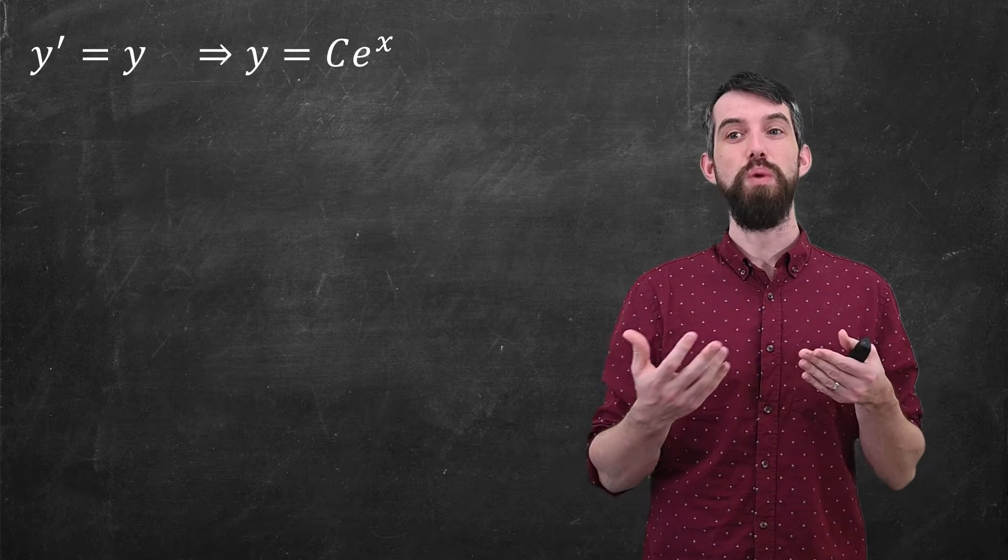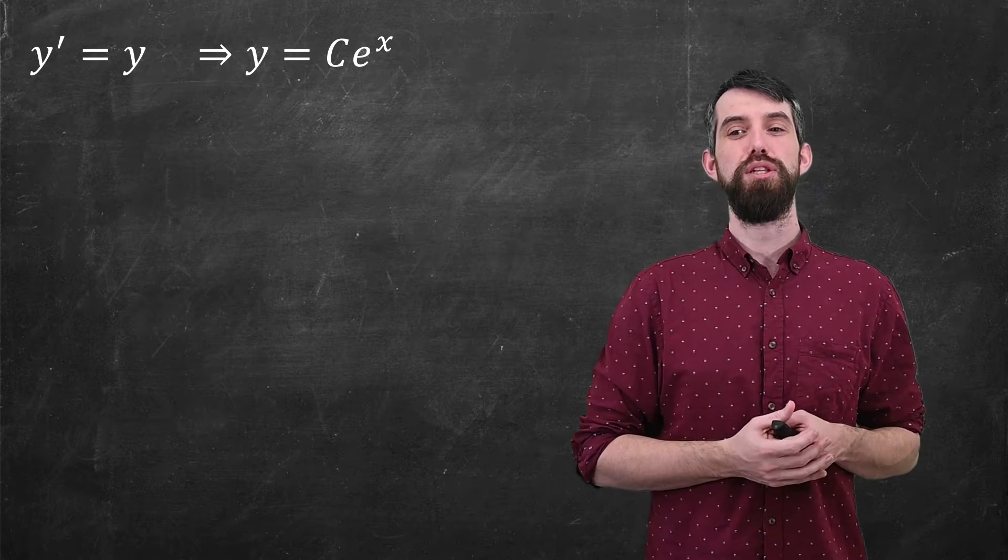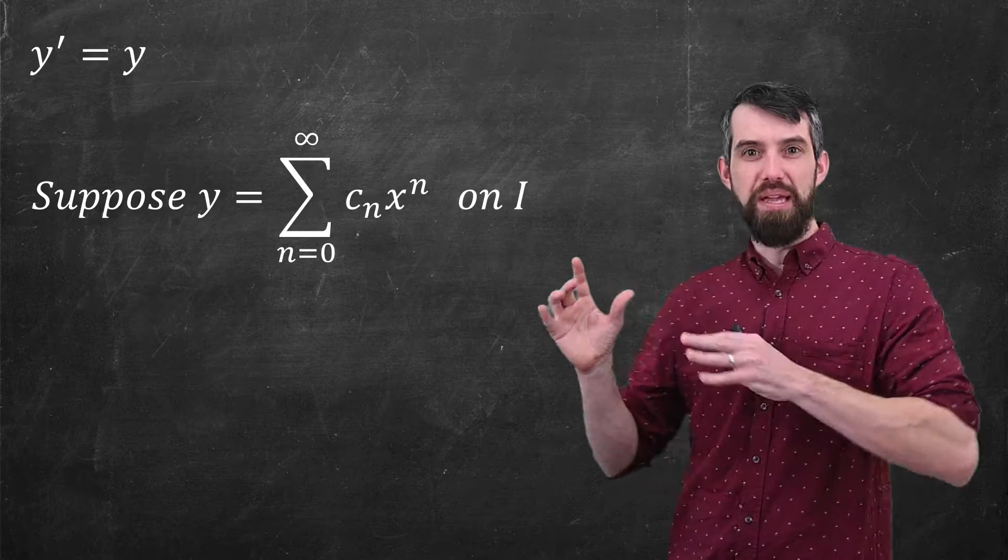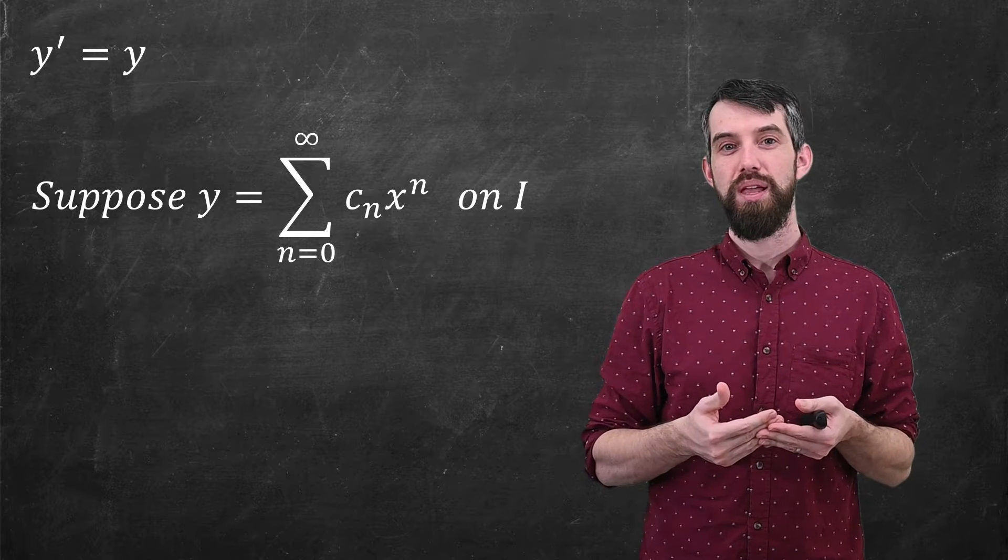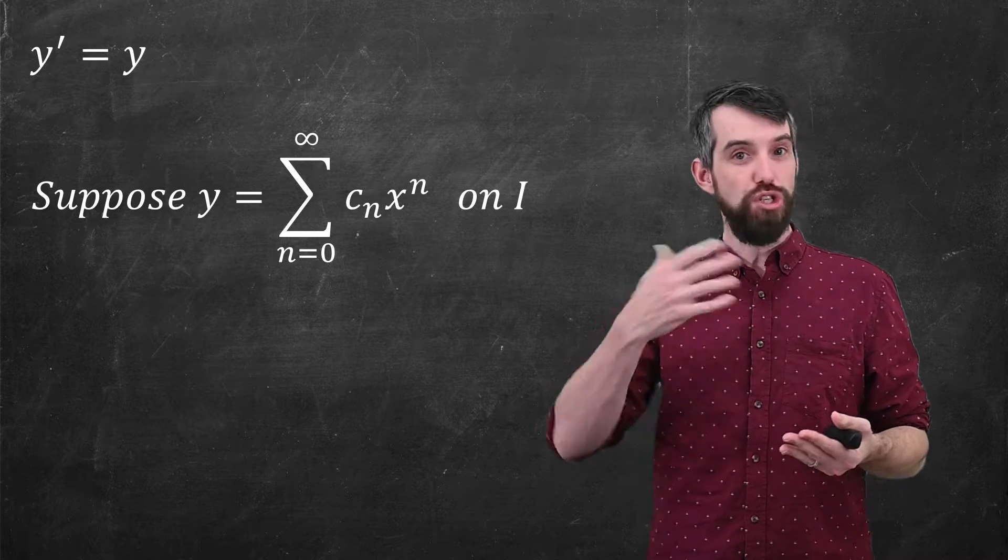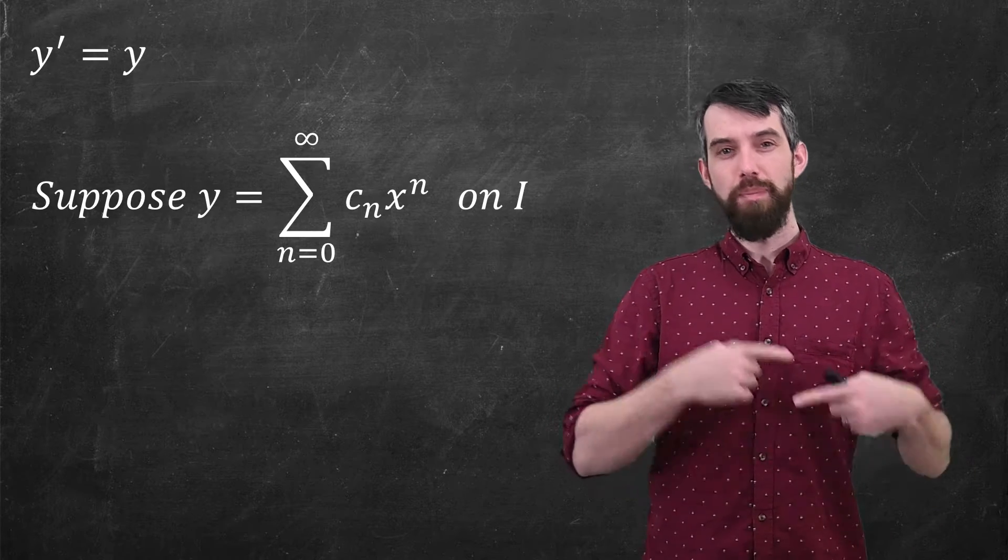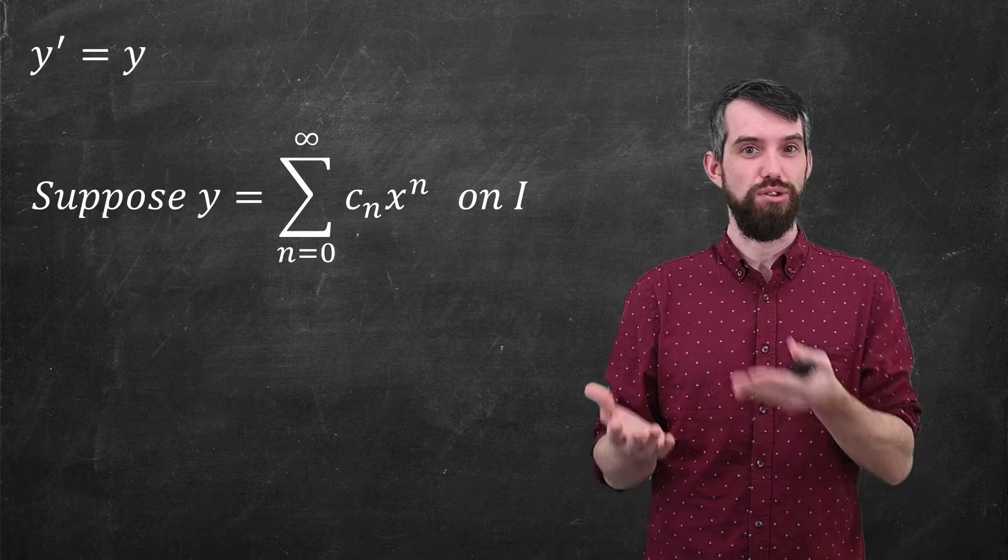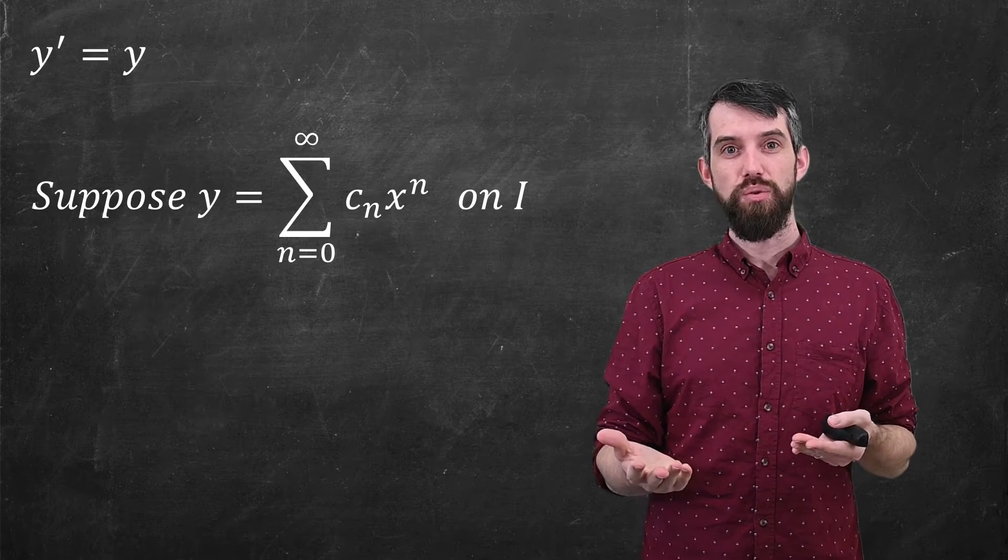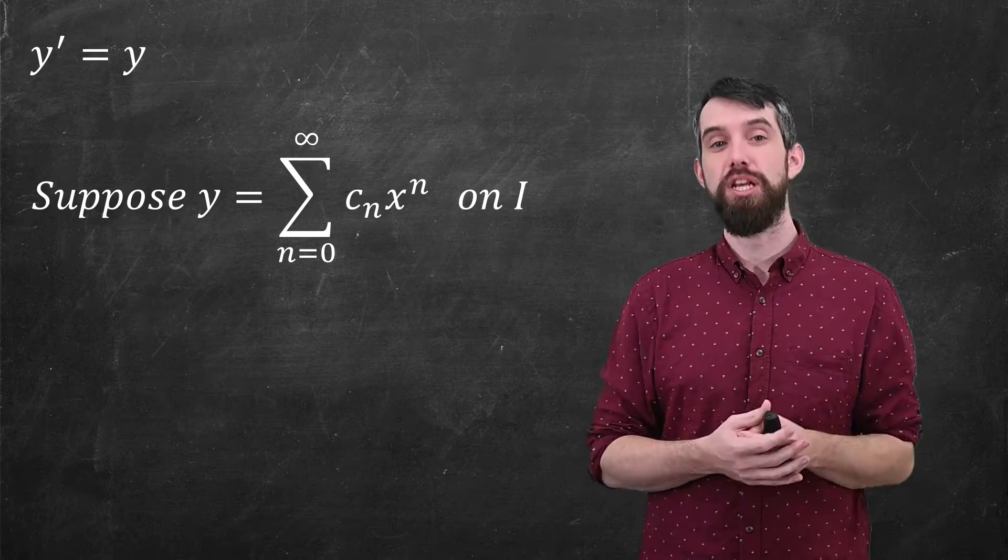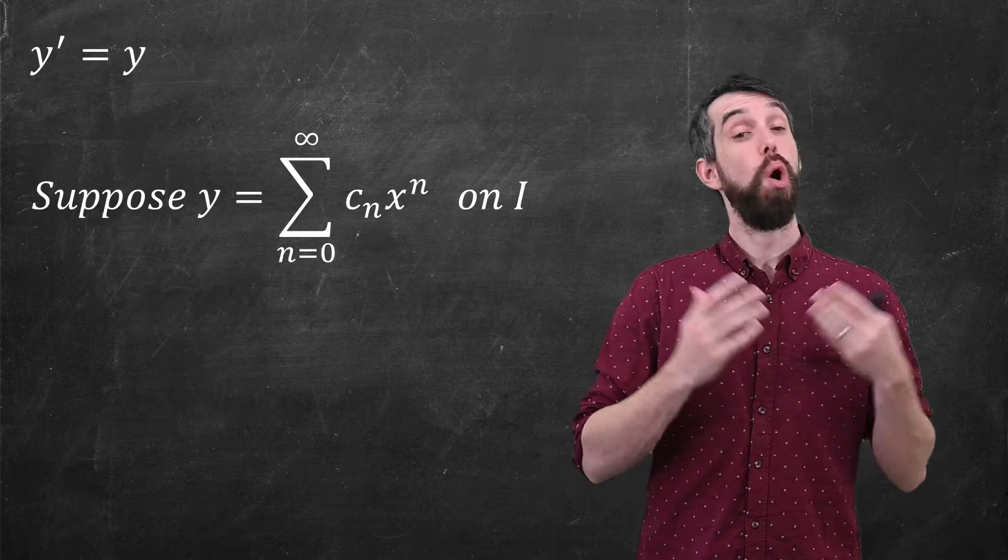But in this video, we want to take a very different approach, which is to use a power series. That is, let me suppose a solution looks like this big mess, a sum from n=0 to infinity of c_n times x^n. This is a power series. It's a function of x in the sense that if you give different values of x, you get different values out of it. But the big question is a question of convergence. You're taking an infinite sum of things. Does that add up to a finite number or does it diverge? So what I'm going to do right now is make an assumption that I haven't justified, but an assumption that it does have a convergent power series on some interval I.